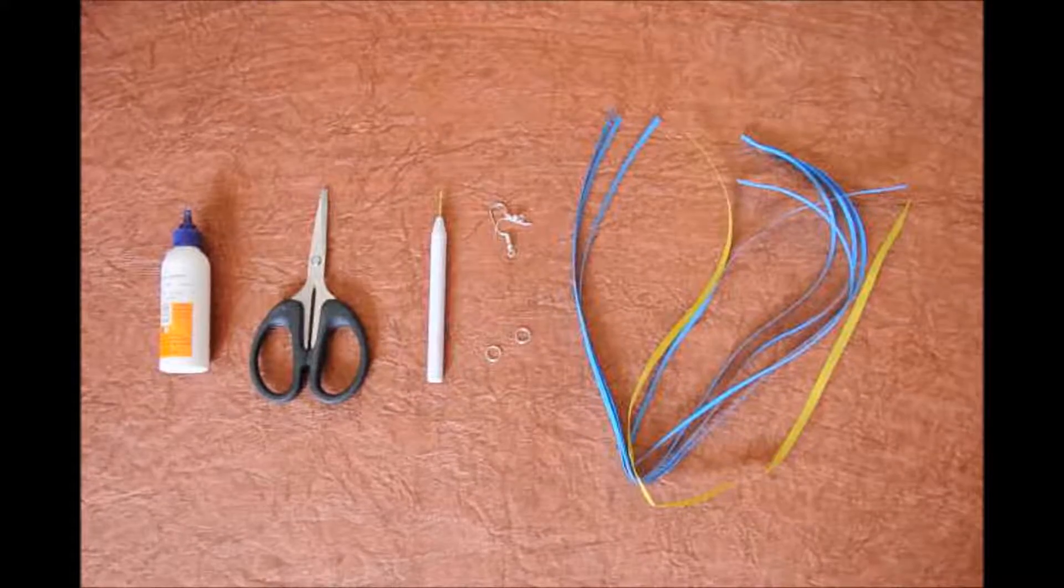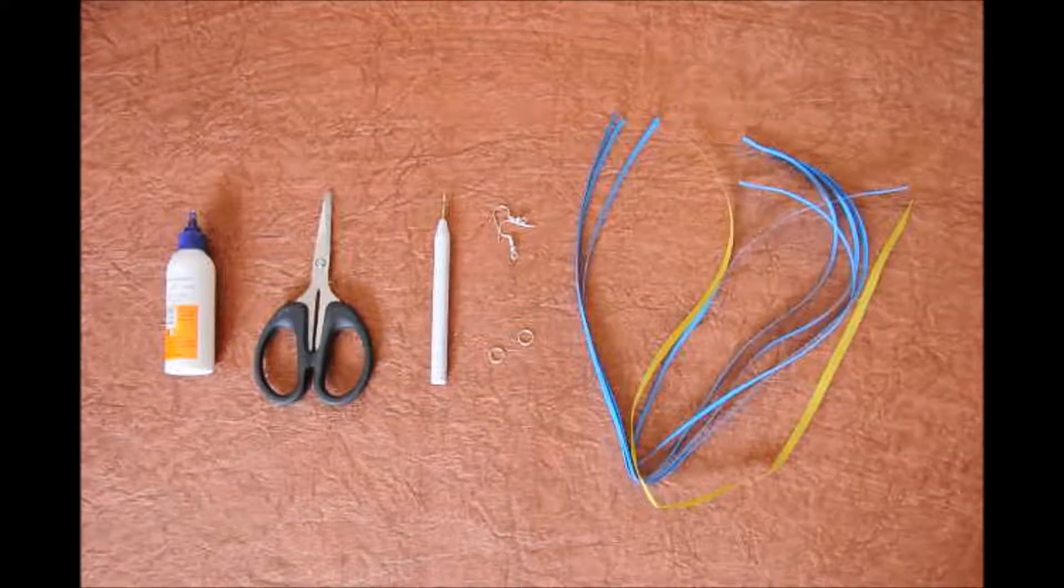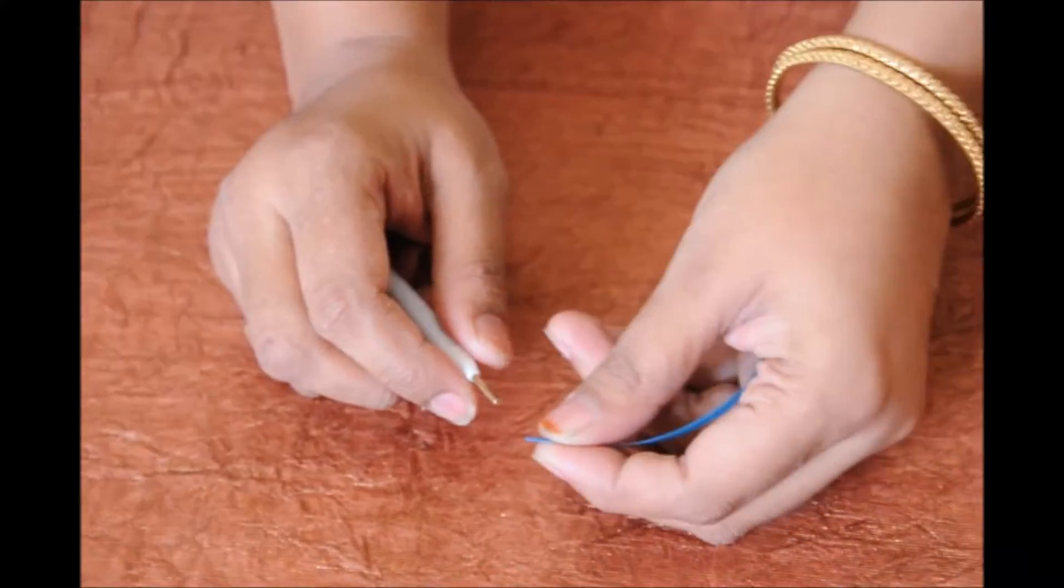If you don't have a quiller, take a toothpick and slit it on the top for about half centimeter and that becomes the quiller.